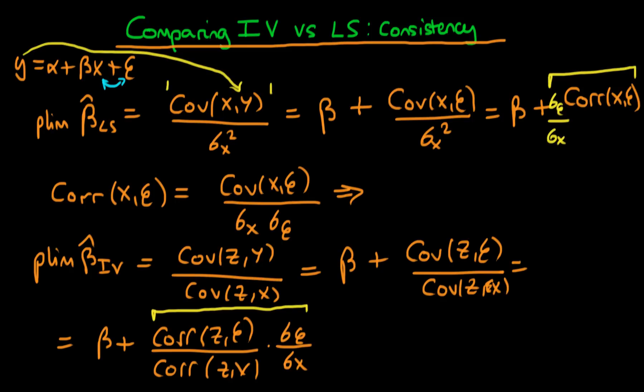And we can ask what are the conditions under which the asymptotic bias of IV estimators is better than the asymptotic bias of least squares estimators.